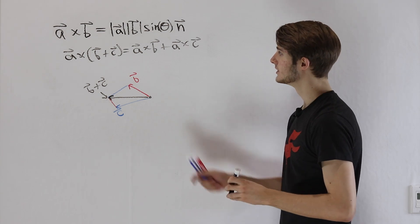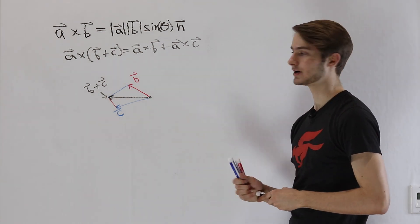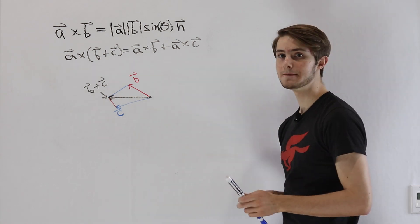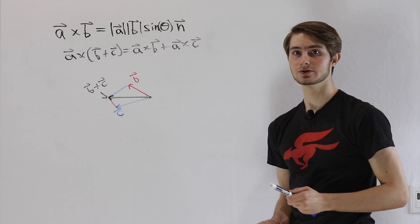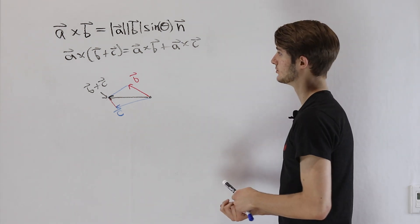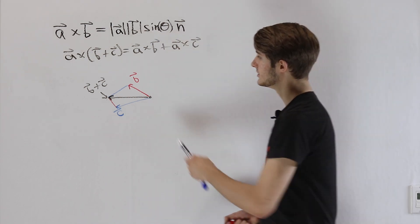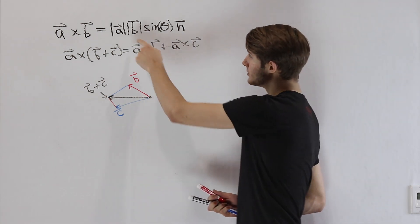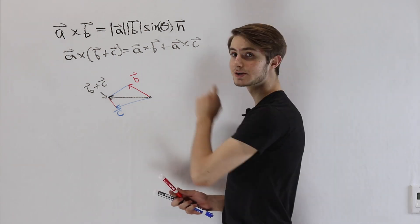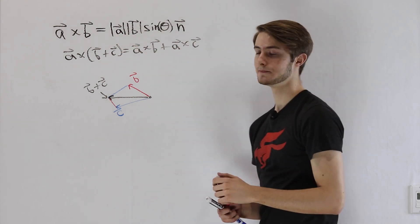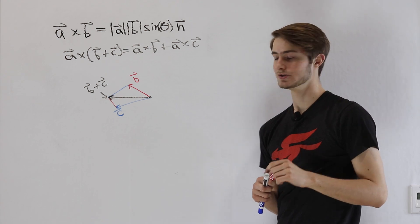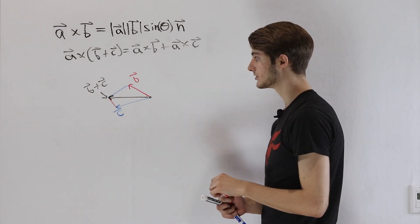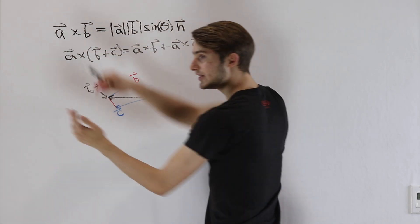Now we need to think about what happens when we take the cross product A cross B and A cross C individually. Because A is orthogonal to both B and C, sine of theta is going to be 1 — since sine of 90 degrees is 1 — so we don't have to worry about that part. The magnitude of our B vector is already included in the formula, but when we take the cross product we're going to multiply it by the magnitude of A, so this vector gets scaled up by the magnitude of A. The same applies to C and to B plus C — we can think of taking this whole diagram and scaling it up by the exact same amount.